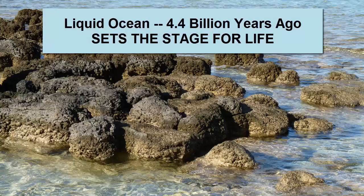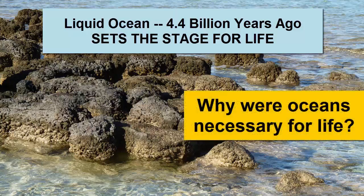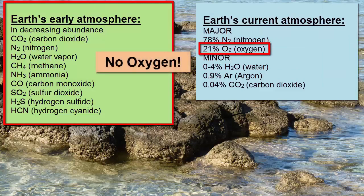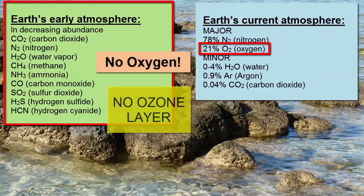With a liquid ocean layer present on Earth's surface 4.4 billion years ago, the stage was set for the earliest life to evolve. Why were oceans necessary for life? Early Earth had no oxygen in its atmosphere, which means it also had no ozone layer. Ultraviolet radiation from the sun readily reached the surface and would have irreparably damaged any biological material.